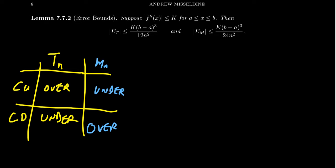Notice that as the interval gets bigger — b minus a is the length of the interval — you cube it, so the longer the interval, the harder it is to approximate the area. But in contrast, you have n squared in the denominator. The more subdivisions you use, the bigger the denominator and the smaller the fraction. So the ideal situation is a small interval length and a large number of subdivisions, and that gives you a good bound.